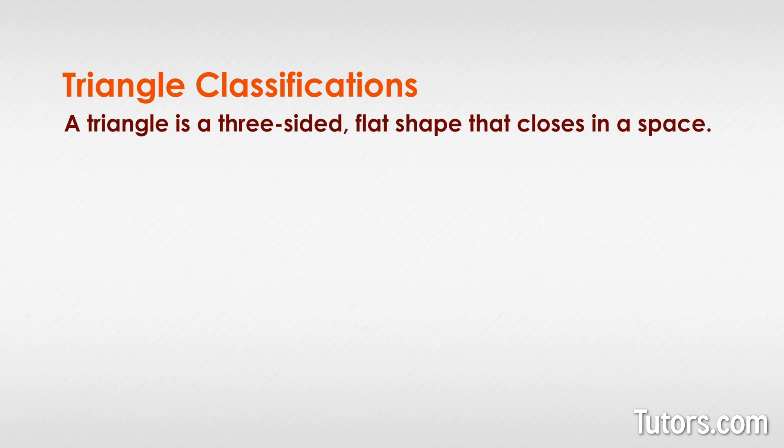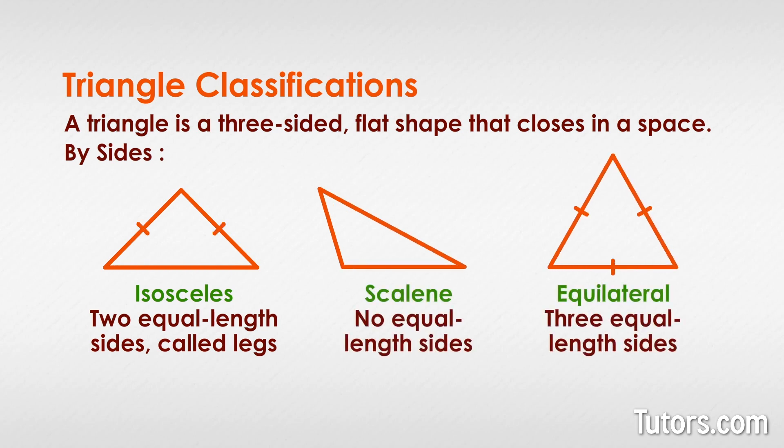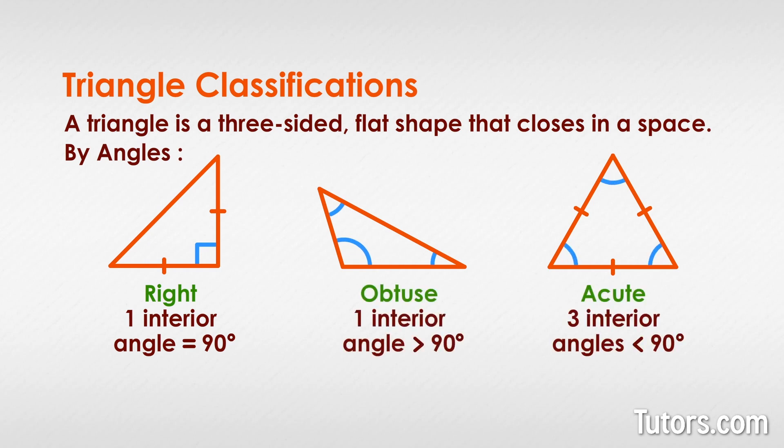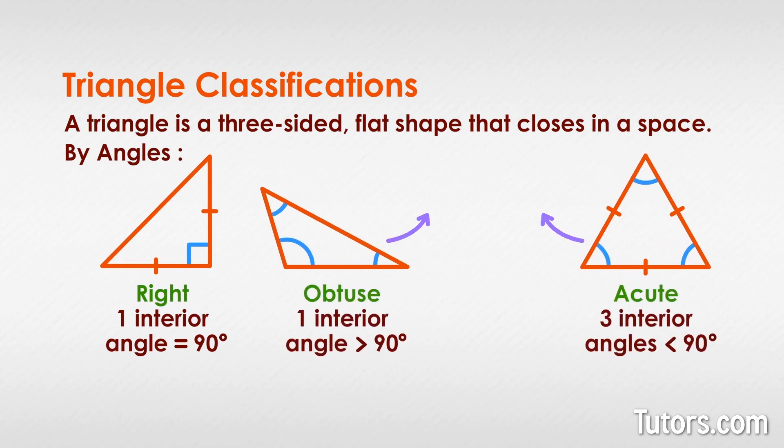Triangles come in many configurations, depending on your choice to focus on their sides or their angles. Acute and obtuse triangles are in a category called oblique triangles, which means they have no right angles.